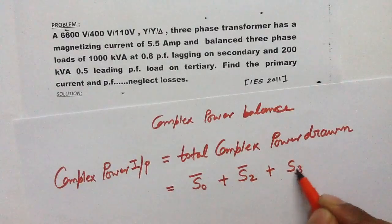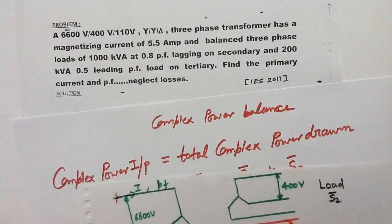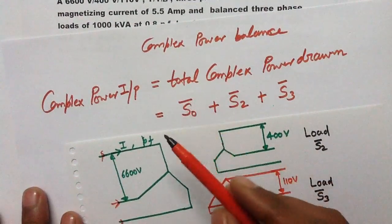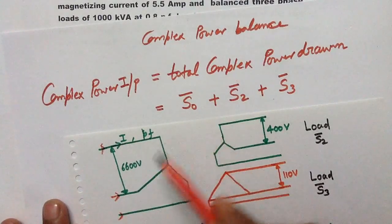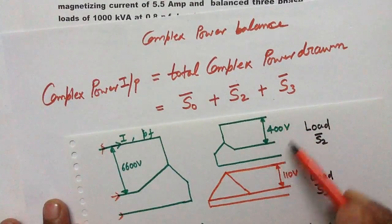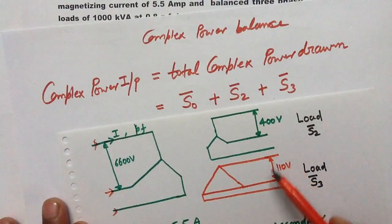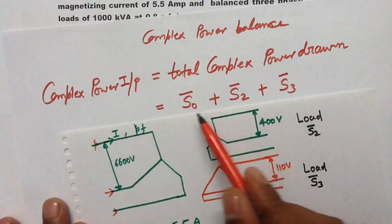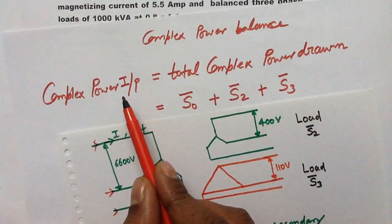S3 is the complex power demanded by the load connected at the tertiary winding. So S_input equals S0 + S2 + S3. This total complex power drawn equals the total complex power input — that is the meaning of complex power balance.